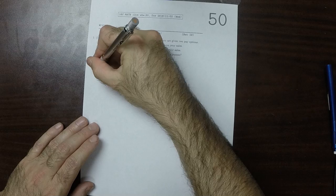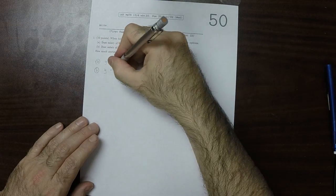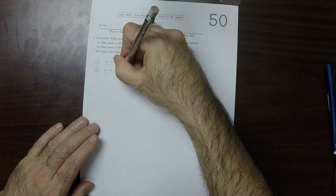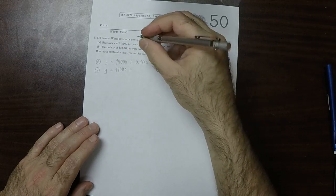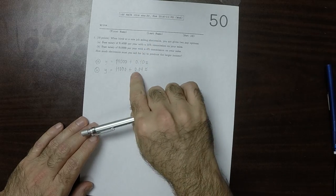Whereas option b is equivalent to a linear function: 19,000 plus 0.04x, which is 4% commission.